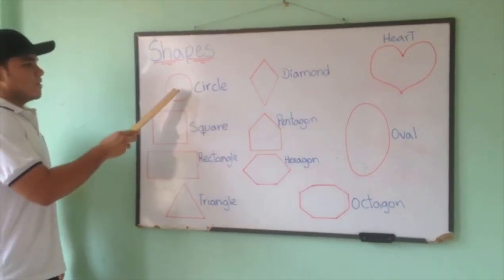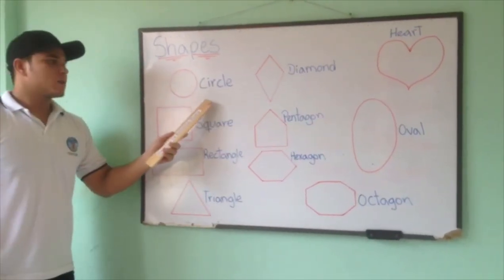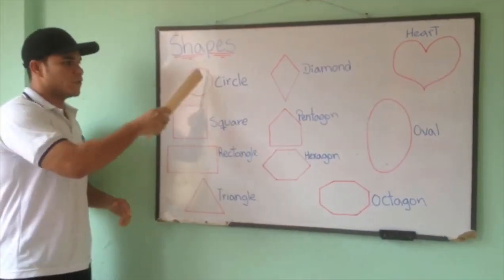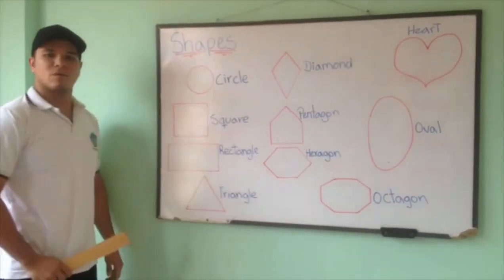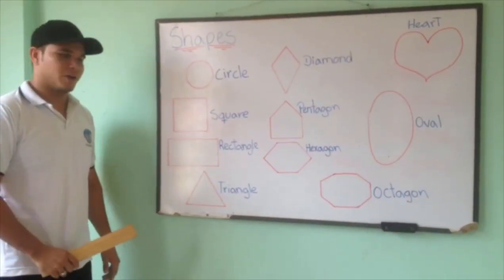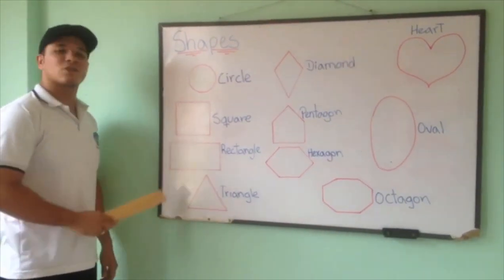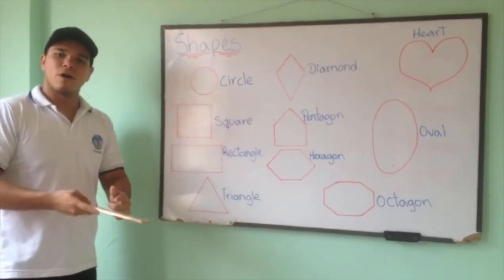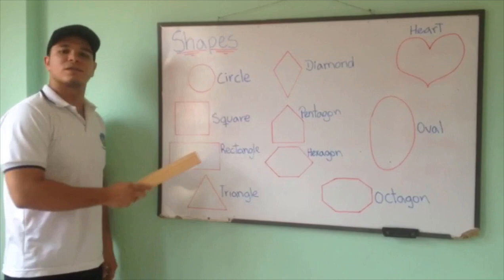Okay, for example, the first shape we have in here is the circle. Circle. Very good. Now we have the square. Square.